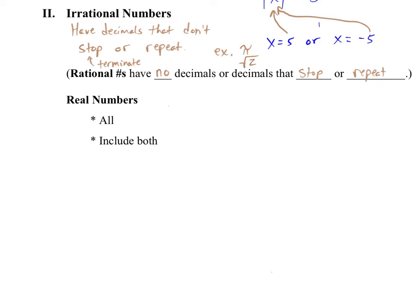Do you agree every number you've used so far is either rational, could be written as a fraction, so no decimal or decimals that stop or repeat, or irrational, decimals that don't stop or repeat. If you take those two together, those are all the numbers you've ever used, and those two together make up real numbers. So, real numbers, all the numbers you've used so far. And it includes both rational and irrational.